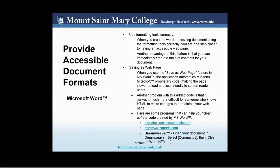Microsoft Word is often used to convey content — for syllabi, discussion forum questions, or assignment instructions. Use formatting tools correctly when using Microsoft Word; doing so puts you one step closer to having an accessible web page, and allows you to immediately create a table of contents. When using the 'save as a web page' feature, the application automatically inserts Microsoft proprietary code, making the page slower to load and less friendly to screen reader users.